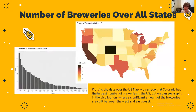Now let's look at the number of breweries in each state. As you can see from the heat map, there is generally a lot of breweries in states with high populations, although one outlier is Colorado with the highest number of breweries — it's in the middle there.